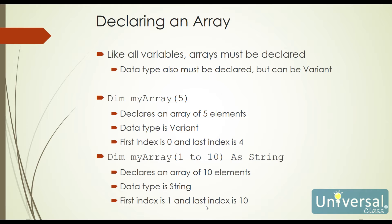Like all other variables, our arrays must be declared. When we declare a variable, we also must declare our data type. If we don't actually specify what it is, just like other variables, they can be declared as a variant. The way that we declare this is by simply dimensioning it, giving it a name, and then in parentheses we specify how many elements it should have. In this case, we're declaring an array called myarray and telling the system that there are five elements. Since there are five elements, the first index number is 0 and the highest index is 4.